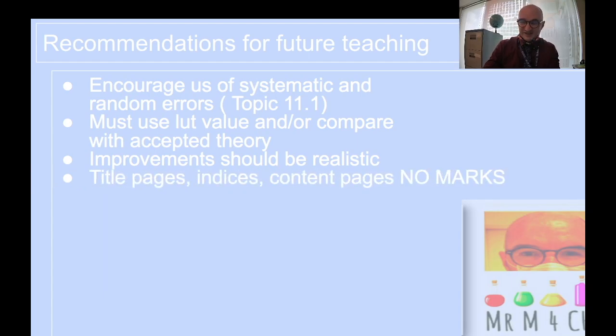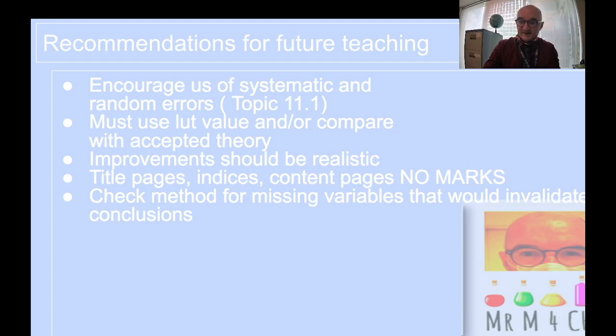Check method for missing variables that would invalidate conclusions. I do find on still a lot of reports that if they're looking at the effects of X on Y, they forget completely about doing a limiting reactant calculation, which means that all they're doing is all they're finding is something they could have calculated from the limiting reactant excess reagent calculation rather than the focus of what the research question suggested. So control of variables and a reflection on the method, reflection on the RQ, would help massively.